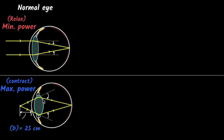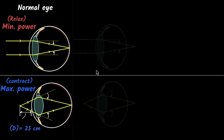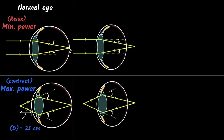So this is the situation for a normal eye. For a normal eye, you can see anything between the near point all the way up to infinity. Now let's look at some of the defects. The first defect we'll see is what happens if the eyeball shrinks. Let me redraw the same thing with the eyeball shrunk and see what it looks like.